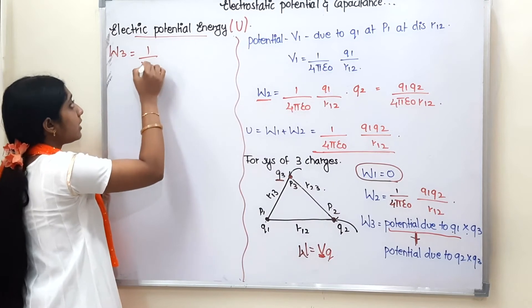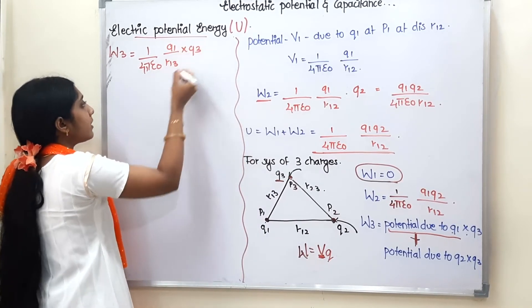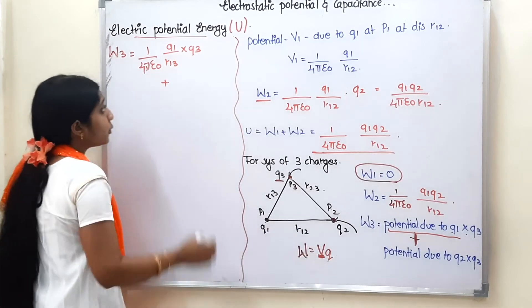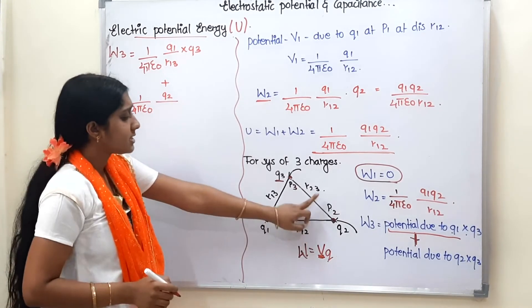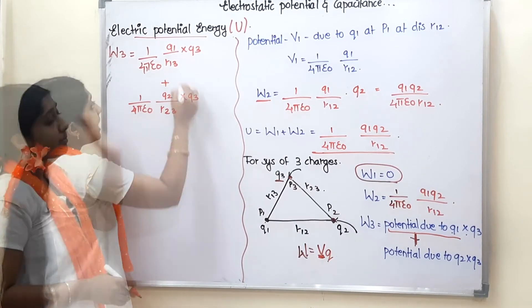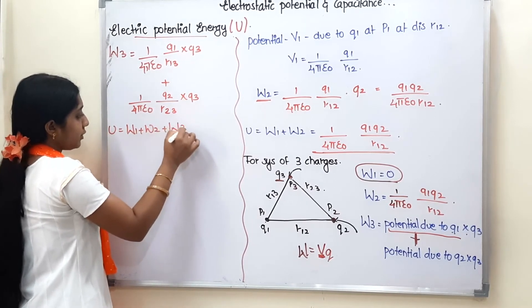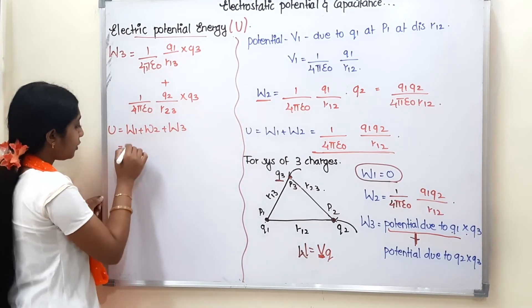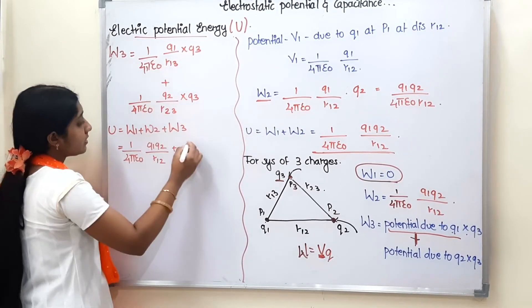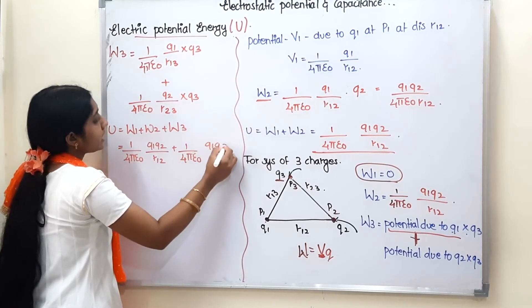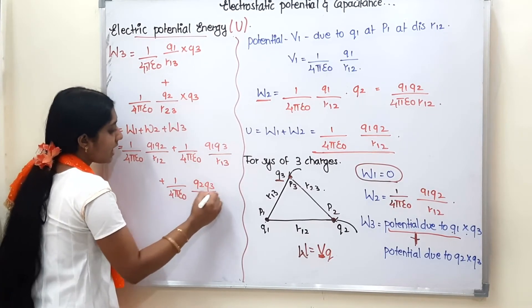The potential due to Q1 at distance R13 is 1/(4πε₀) · Q1/R13, multiplied by charge Q3. Plus, the potential due to Q2 at distance R23 is 1/(4πε₀) · Q2/R23, multiplied by Q3. So W3 equals 1/(4πε₀) · Q1·Q3/R13 + 1/(4πε₀) · Q2·Q3/R23.